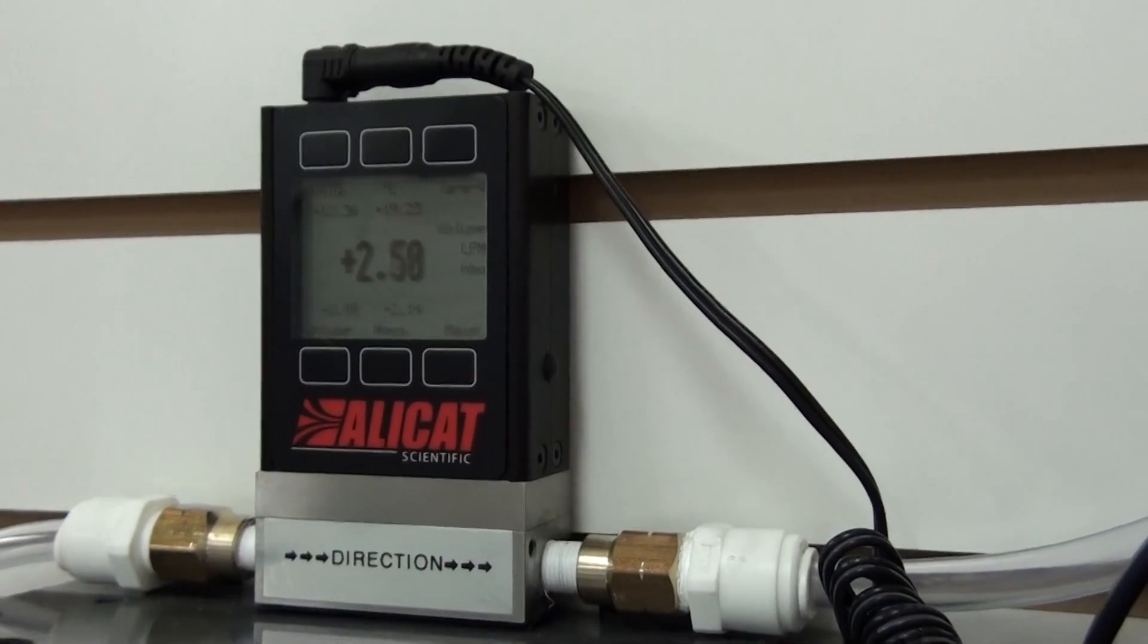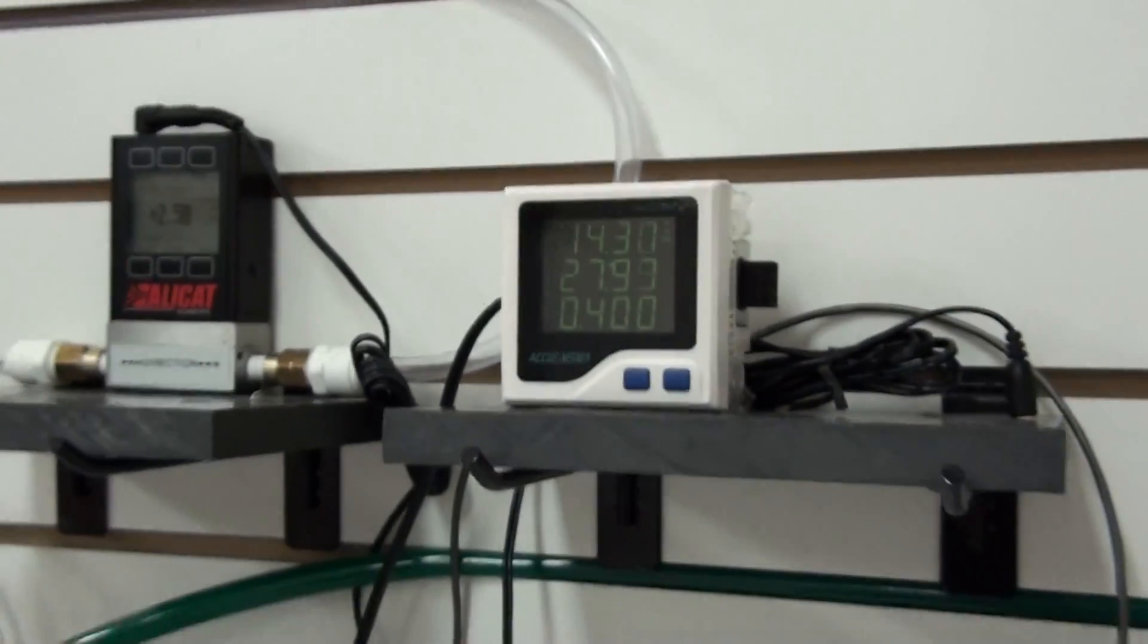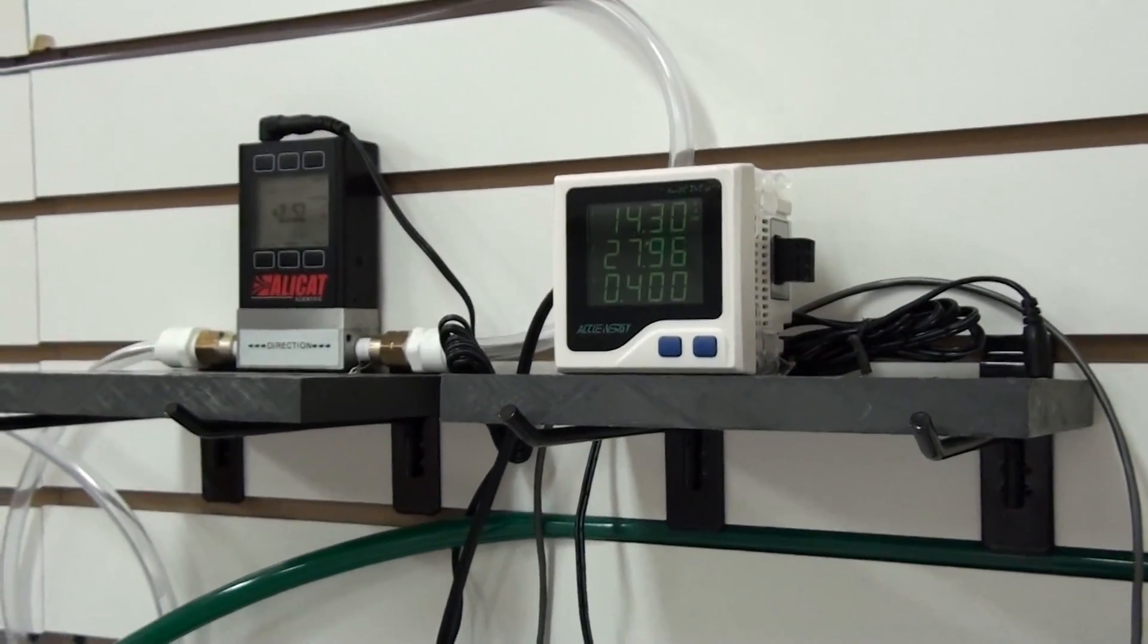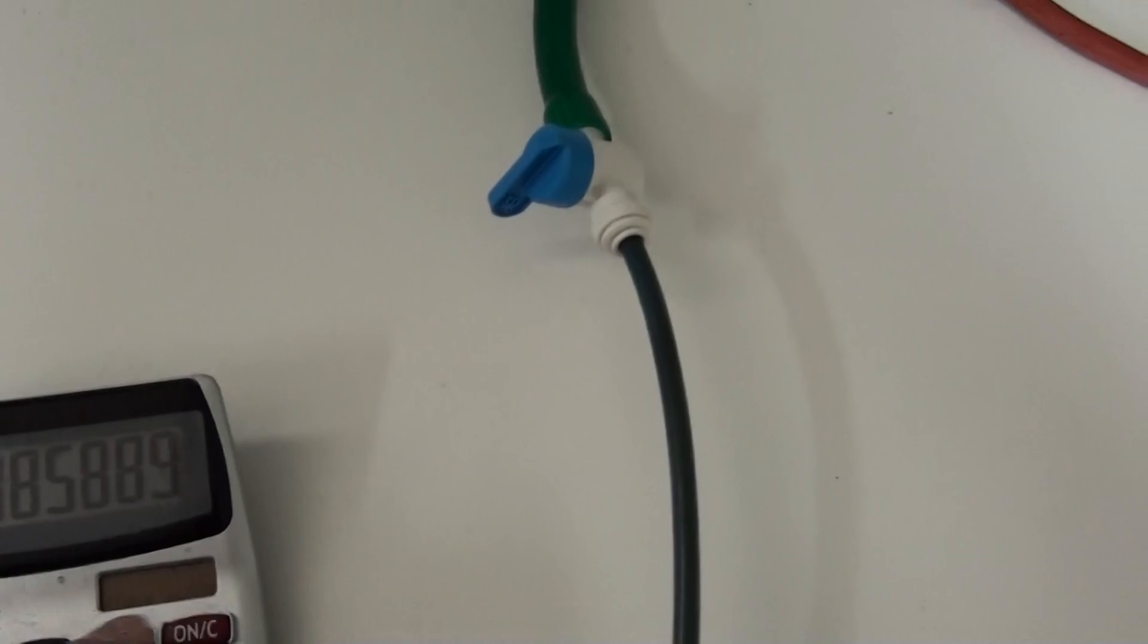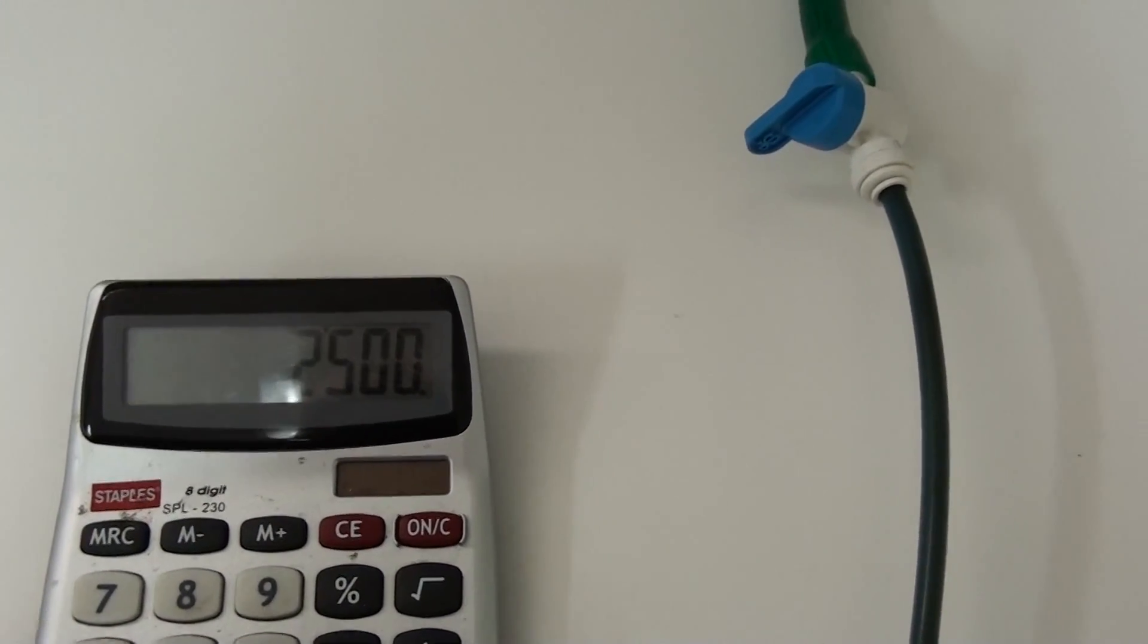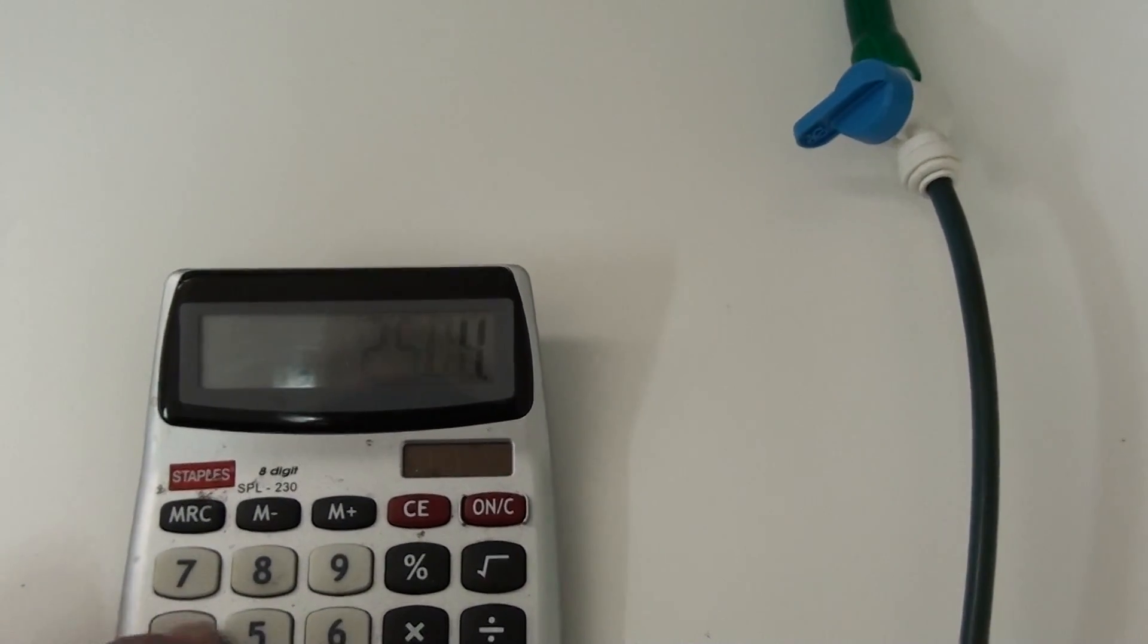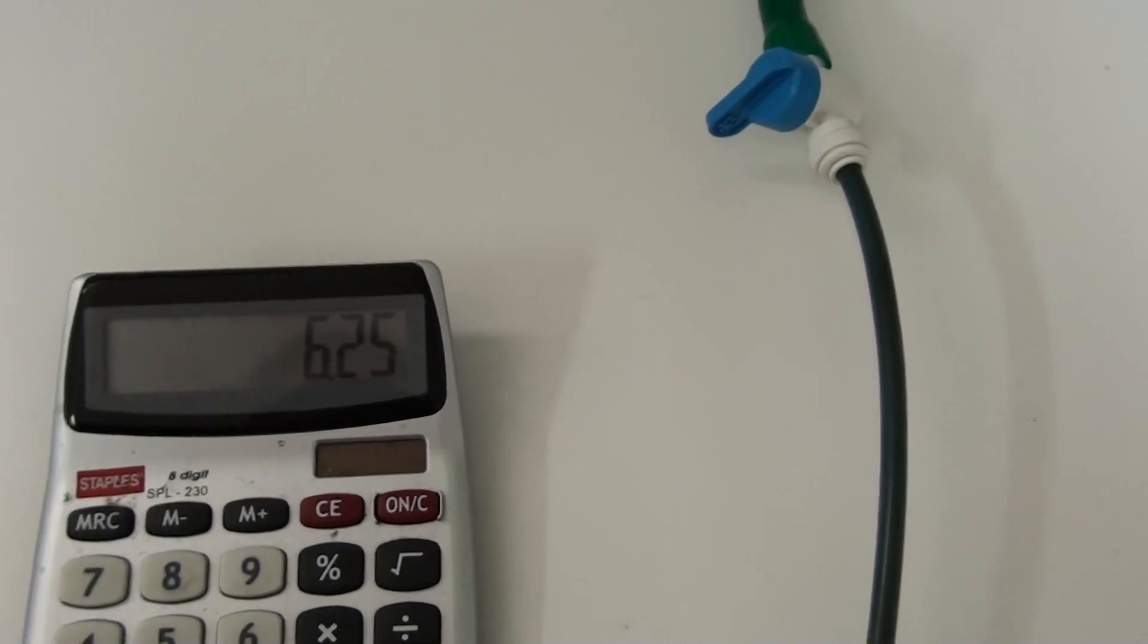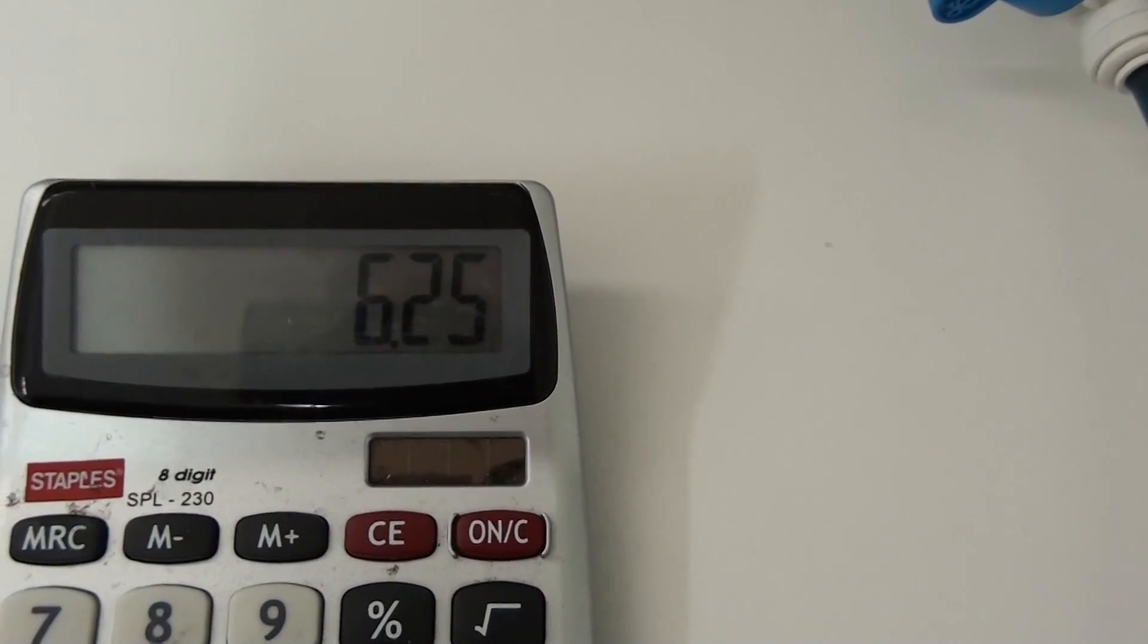Generator's producing 2.5 liters per minute. Let's take a look at the efficiency. 2500 divided by about 400 watts. That's 6.25 mmW. Not too bad.